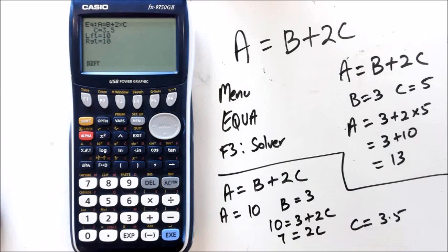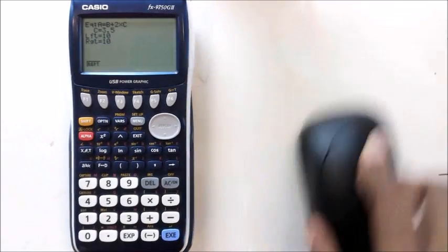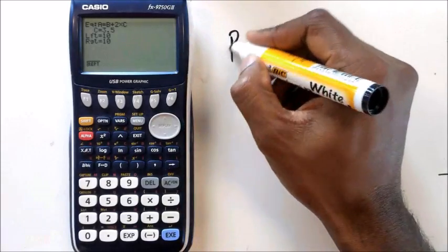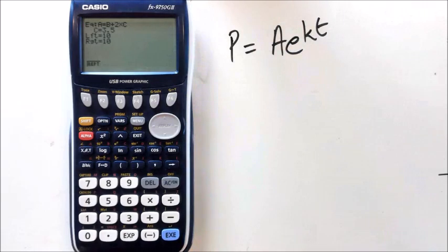Alright, now this is a really basic, simple little equation. Now I want to show a little bit complicated. This is particularly useful for people that are doing level 3 calc. Now you might end up with an equation that looks like this, where P equals Ae^(kt).